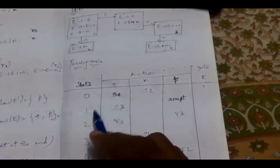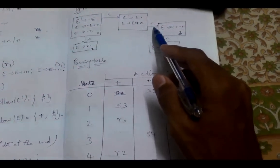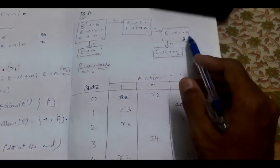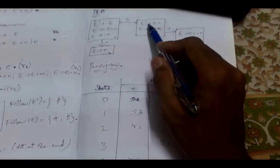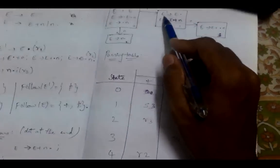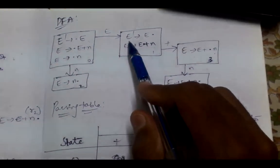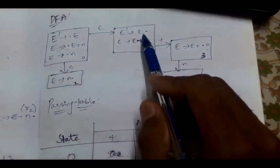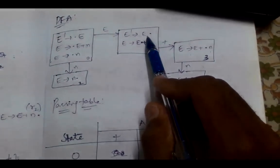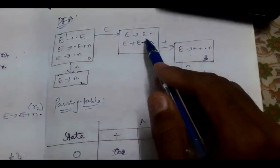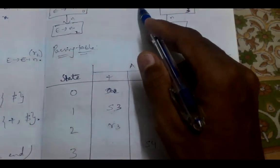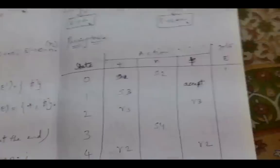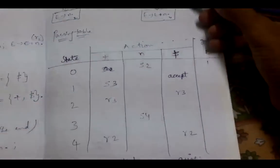For State 1 on input plus, we go to State 3 by shifting the dot, so we write S3 in the plus column. State 1 also has a complete item E' → E•, which is special because it involves the start symbol. When parsing is completed for the start symbol, the string is accepted. So for State 1 on input dollar, we write Accept. For State 3 on input N, we go to State 4, so we write S4.